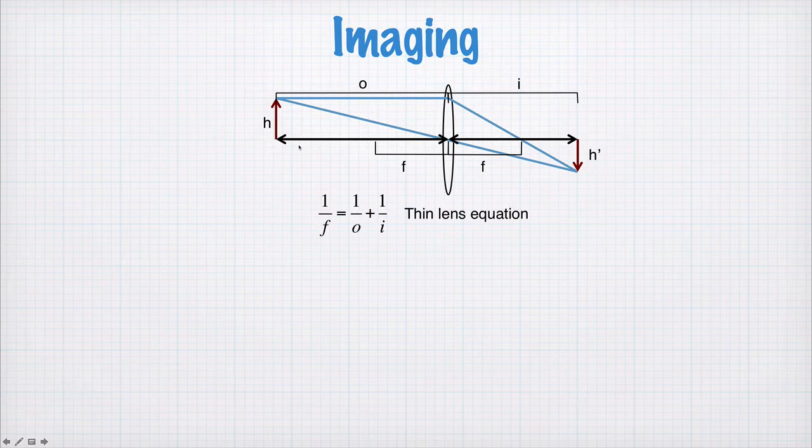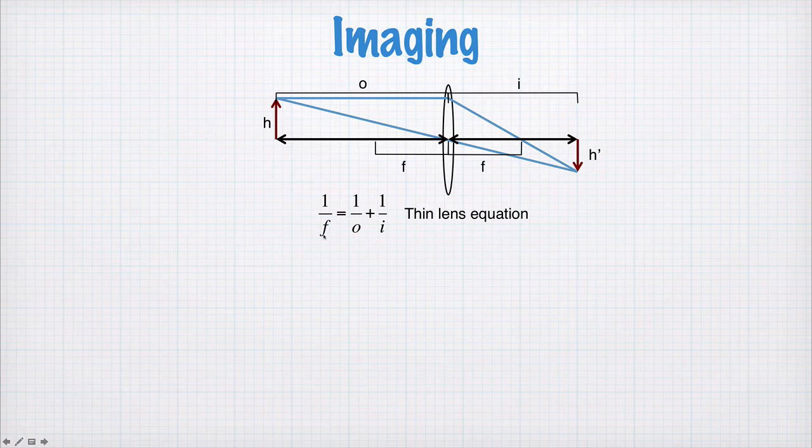So, the thin lens equation, for a thin lens, this is true. One divided by the focal length is equal to one divided by the object distance plus one divided by the image distance.